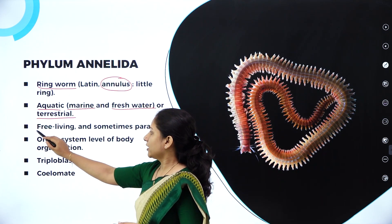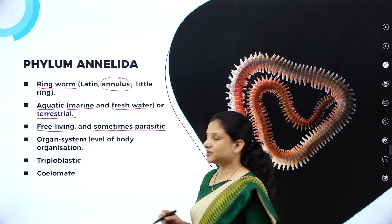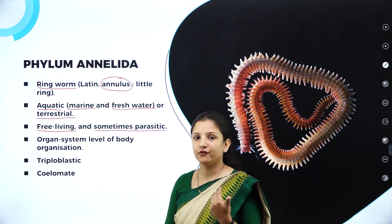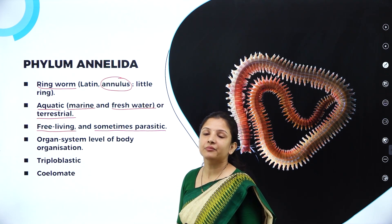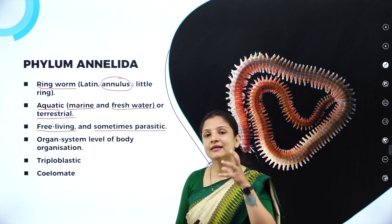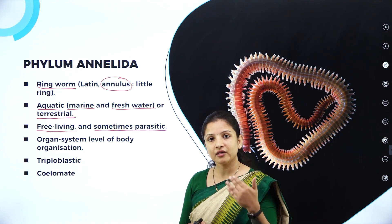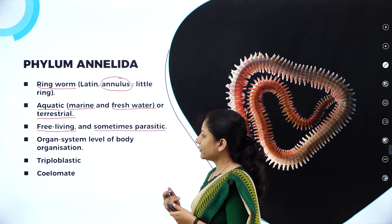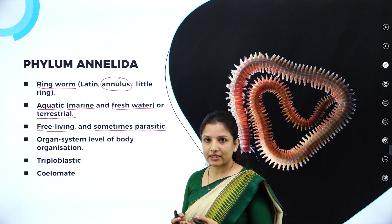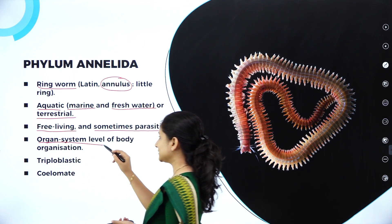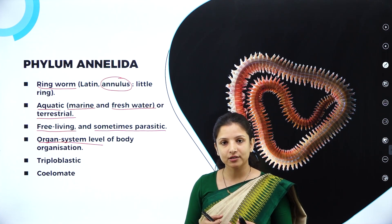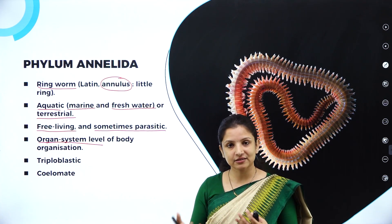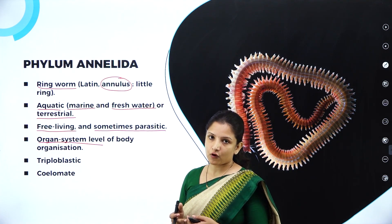They can be free-living and some are parasitic, meaning they depend on a living host for survival. For example, leeches can be considered parasitic because they depend on the blood of other living animals for their survival. Talking about the level of body organization, they have organ system level of body organization, with a specialized organ system for excretion. They have nephridia which help in the process of excretion, giving them an organ system level of organization.